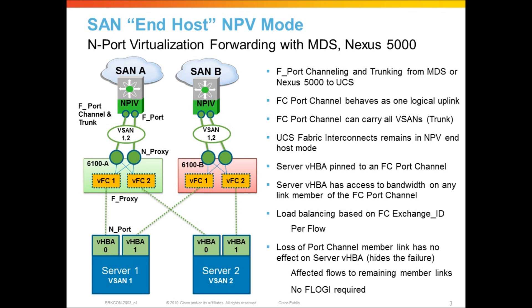When a server is pinned to an uplink, it's pinned to this port channel logical uplink. Some flows will use one physical link and other flows will use another physical link, so you'll have basic load balancing across multiple fiber channel uplinks. One server has access to all of the bandwidth in the port channel, not just one physical link. That load balancing is done based on FC exchange IDs, so it's a per-flow hashing — some fiber channel flows on one link and some on another.